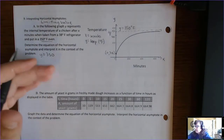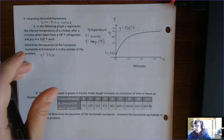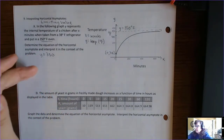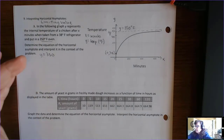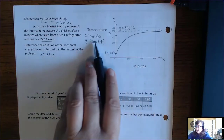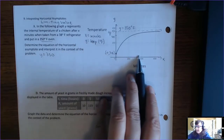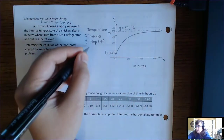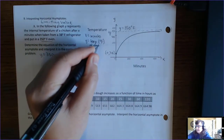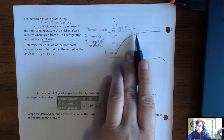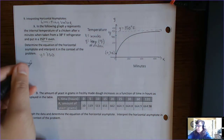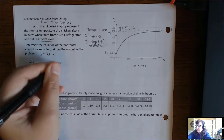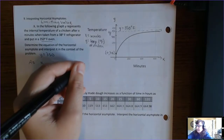To interpret the horizontal asymptote, don't just state the equation — you need to add the x and y units and explain what's happening. This is where your understanding shows. As x — the number of minutes — goes by, the y — the internal temperature of the chicken — is approaching 350 degrees Fahrenheit.